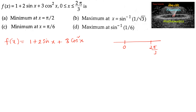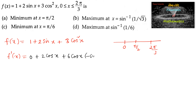Now let us find the derivative. f'(x) = 0 + 2cos(x) + 6cos(x) · (−sin(x)). Taking 2cos(x) common, we can write f'(x) = 2cos(x)(1 − 3sin(x)).